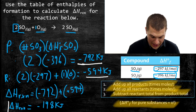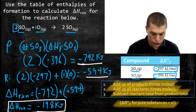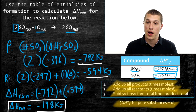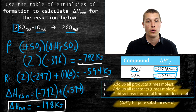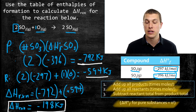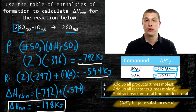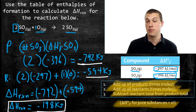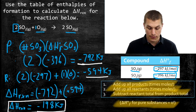Why does this series of adding and subtracting give us the enthalpy of reaction? We've taken how much energy it takes to form the products — sulfur trioxide — and subtracted the energy it takes to form the reactants. Energy is always conserved, so when I have reactants, the energy used to make them is still stored in them. Subtracting the formation energy of reactants from that of products gives us the enthalpy of that reaction.